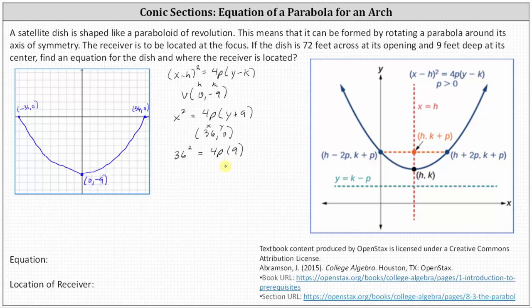And now we can solve for p or 4p. I'm going to solve for 4p by dividing both sides by 9. Simplifying, we have 4p equals 36² divided by 9, which equals 144.